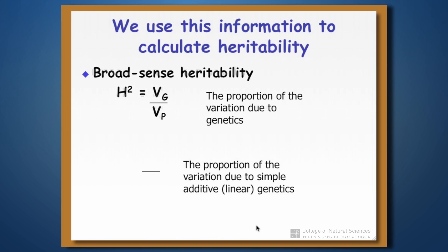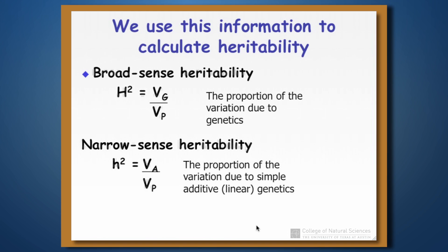There's another kind of heritability that turns out to be more important for quantitative genetics when we're trying to understand evolution. This is called narrow sense heritability, symbolized with a lowercase h squared. It's VA — the additive genetic variance — divided by the phenotypic variance. The narrow sense heritability is almost always less than one, and it tells us the proportion of the phenotypic variance made up of additive genetic variance.